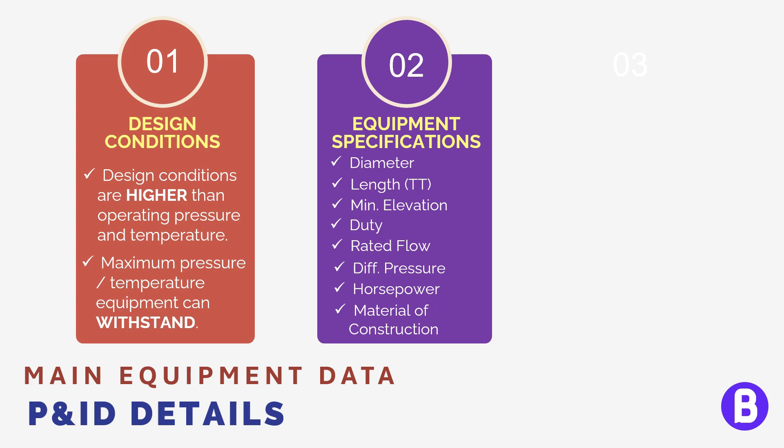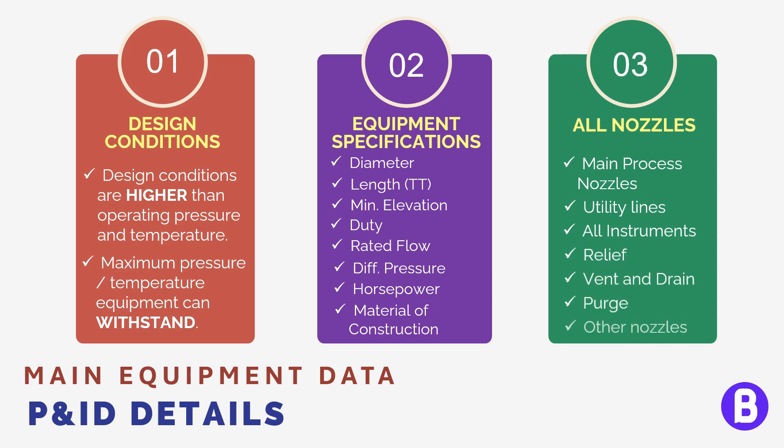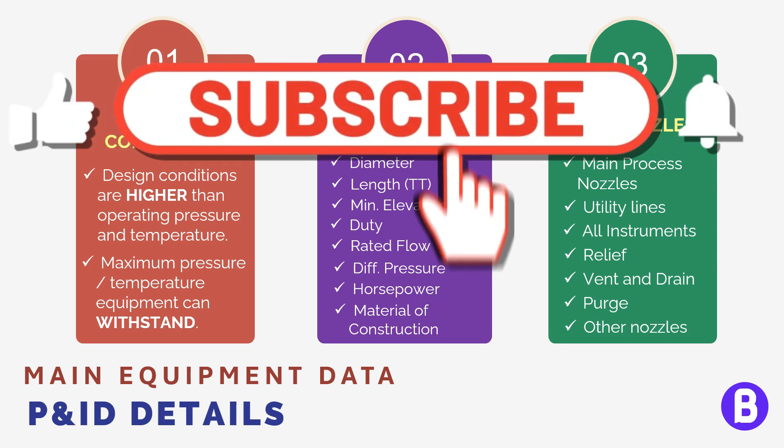Finally, for all equipment, all nozzles and manholes are expected to be shown. In addition to the main nozzles for inlet and outlet fluids, we should also show other nozzles for instruments or for utility connections, such as nozzles for steam or nitrogen purging carried out during maintenance to remove hydrocarbon vapor and allow the operator to go inside the vessel. We have seen an example in a previous video showing how nozzles are shown on the P&IDs.